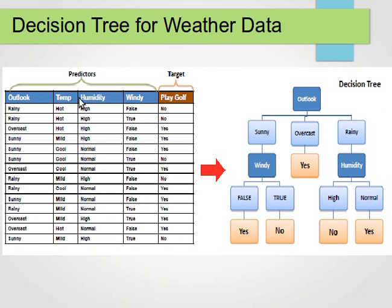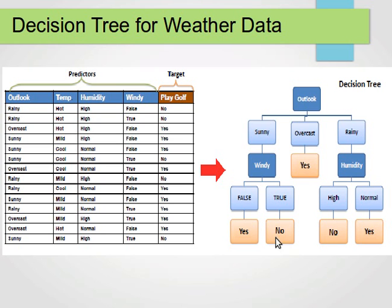For our weather dataset, if you remember, we had four attributes: outlook, temperature, humidity, and windy — all of them categorical. And we had our target or class: to play golf, either yes or no. A decision tree might look like this: we can have a root node of outlook and then branch for sunny, overcast, and rainy. For sunny, maybe the best way to branch is on windy — for true or false we can have yes or no. For overcast, it's always a yes. And for rainy, we can branch on humidity. Notice that temperature is not used at all. For high or normal humidity, we then have our leaf nodes with class values yes or no.